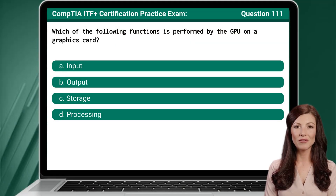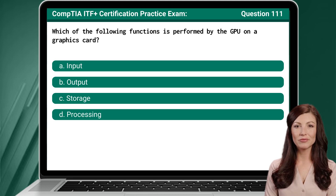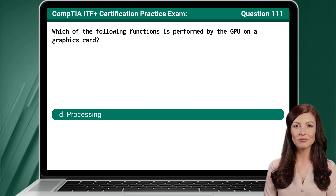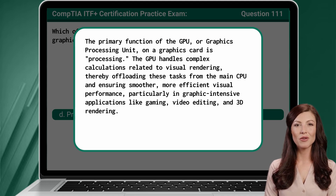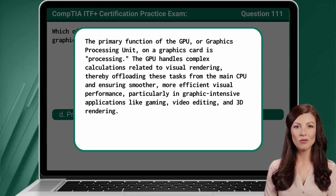Question 111. Which of the following functions is performed by the GPU on a graphics card? The answer is D: Processing. The primary function of the GPU, or graphics processing unit, on a graphics card is processing. The GPU handles complex calculations related to visual rendering, thereby offloading these tasks from the main CPU and ensuring smoother, more efficient visual performance, particularly in graphic-intensive applications like gaming, video editing, and 3D rendering.